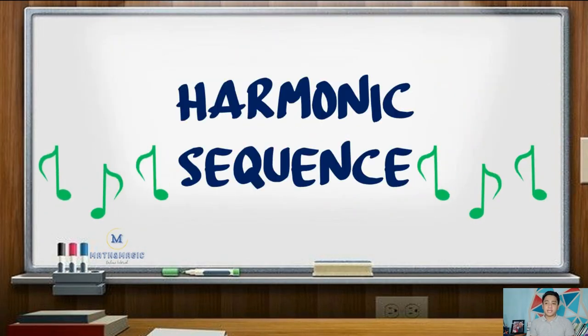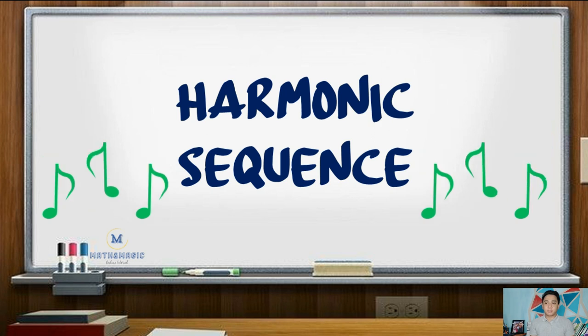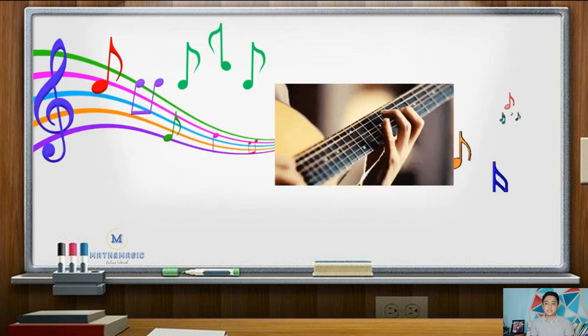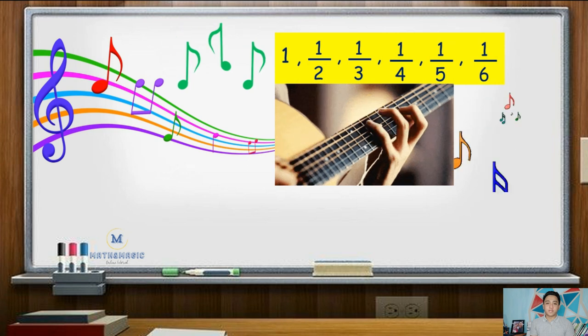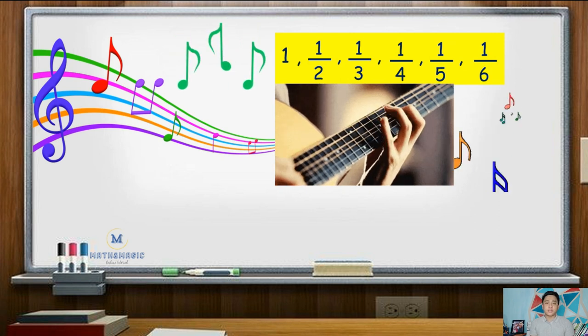The term harmonic is associated to a property in music. If a set of strings of uniform tension, whose lengths are proportional to 1, 1 half, 1 third, 1 fourth, 1 fifth, 1 sixth, are sounded together, the effect is said to be harmonious or pleasing to the ears.